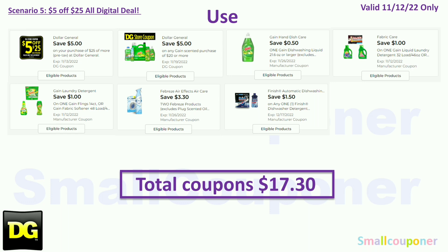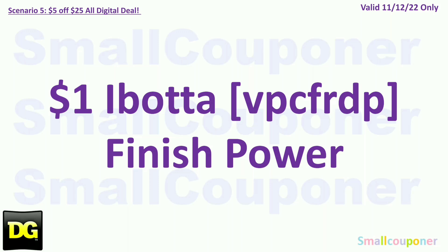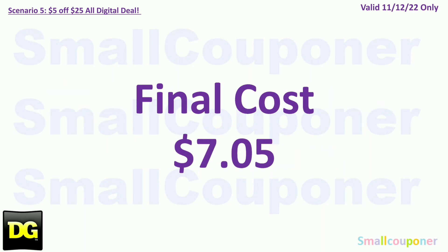You will use the $5.25 for this Saturday, November 12th. Coupons: $5.20 off gain-scented purchase store coupon, $0.50 off Gain dish, $1 off Gain liquid, $1 off Gain, $3.30 off two Febreze, and $1.50 off Finish. Total coupons: $17.30. You'll pay $8.05 plus tax. Submit your receipt to Ibotta to get $1 back for the Finish Powerball. My referral code is VPCFRDP — also in the description box below. If you are new to Ibotta, you get a $10 bonus after your first redemption. With this scenario, a new Ibotta user gets $11 back total, making your final cost $7.05.